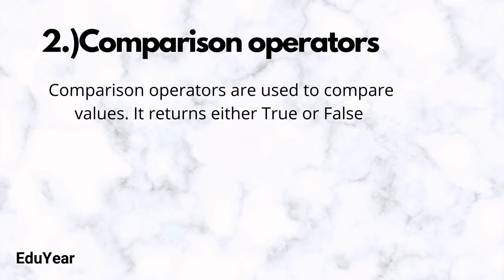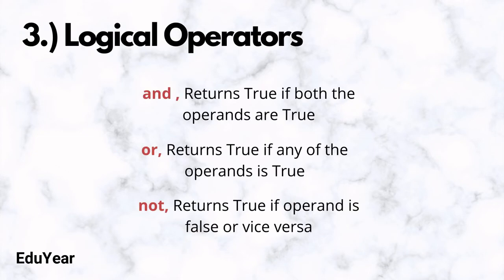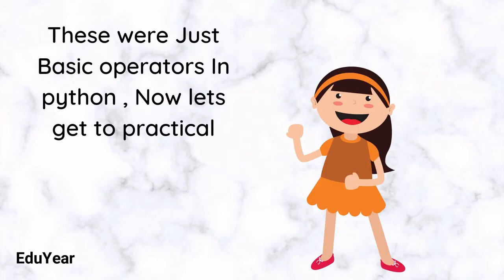Comparison operators are used to compare values. It returns either true or false based on the conditions. Logical operators—we have three logical operators: and, or, not. We will learn about them deeply in next video. These were the basic operators in Python.